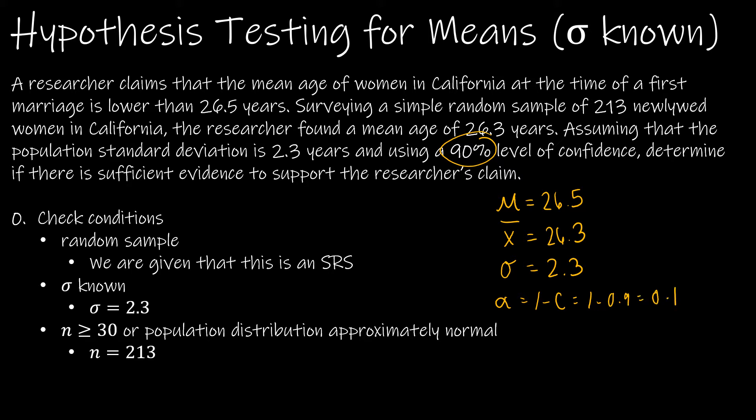Determine if there is sufficient evidence to support the researcher's claim. So what is the claim? The claim is the mean age of women is lower than 26.5 years. Even though I'm not to the step yet where I'm supposed to write the hypotheses, it's always good to think about what it's going to be.